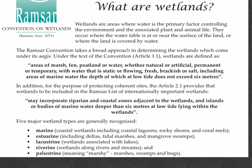The standard definition as per the Ramsar convention is that wetlands are areas of marsh, fen, peatland, or water, whether natural or artificial, permanent or temporary, with water that is static or flowing, fresh, brackish or salt, including areas of marine water the depth of which at low tide does not exceed six meters.